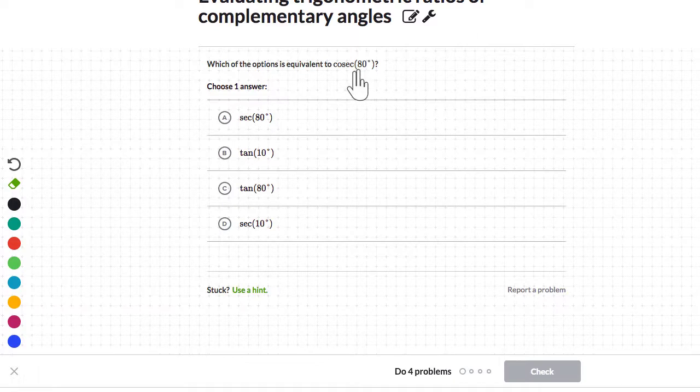So I need to know what cosecant theta is equal to. I know that cosecant of any angle, cosecant of any angle theta, will be equal to secant of 90 minus theta. Right, this is just a property that I'm aware of, because I know what these ratios really mean.